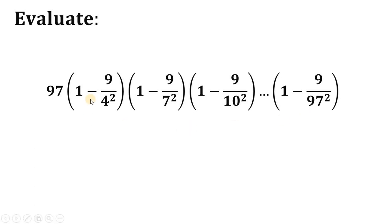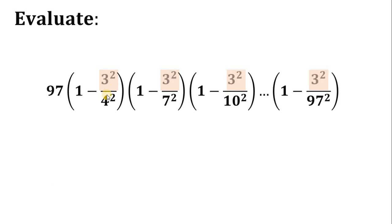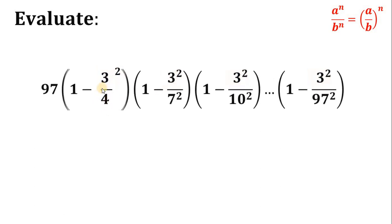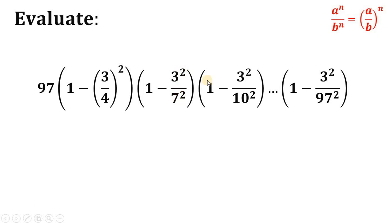First, let's focus on the numerator 9 in each fraction. We know that 9 is just 3 squared, so all of these 9s can be written as 3 squared. Now recalling the law of exponents: a raised to n over b raised to n equals a over b, raised to the power of n. So 3 squared over 4 squared can be written as 3 over 4, quantity squared — and similarly for 3 squared over 7 squared, 3 squared over 10 squared, all the way up to 3 squared over 97 squared.